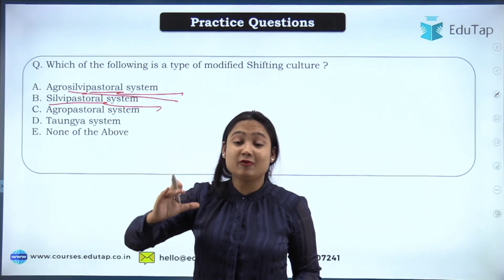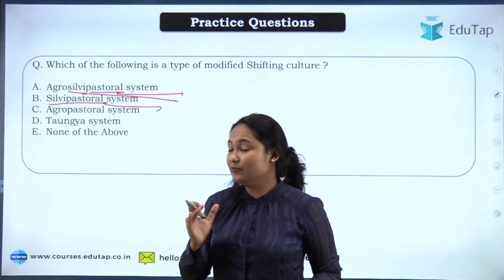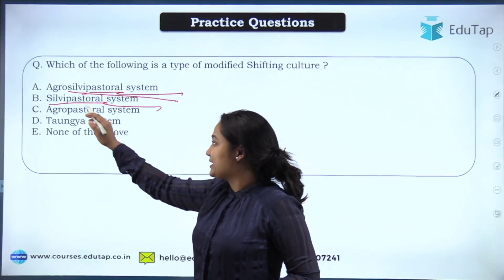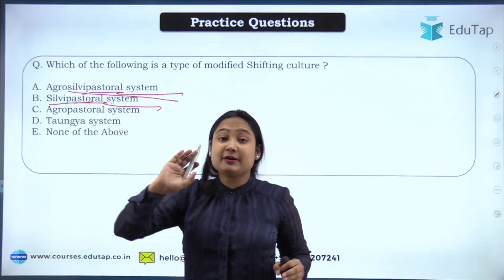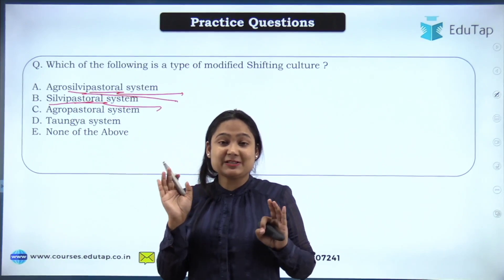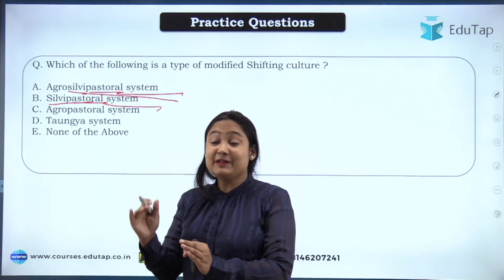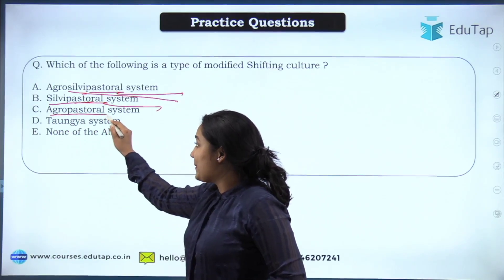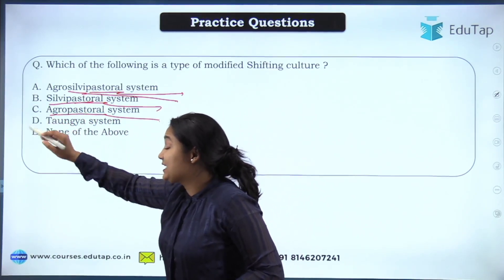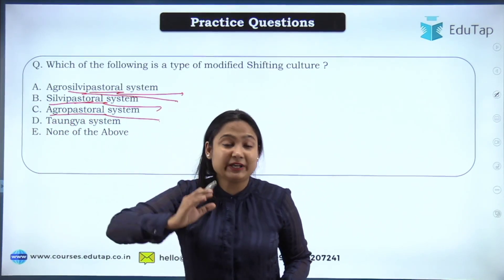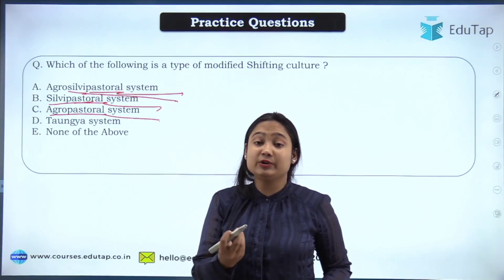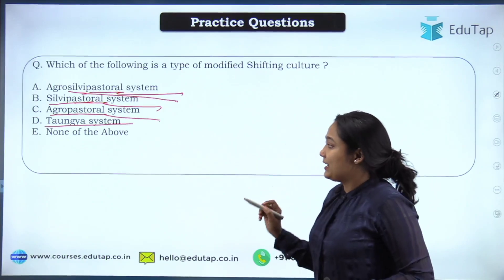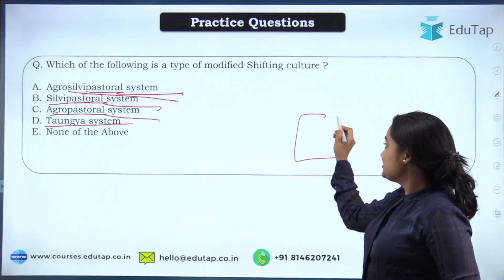So the silvi-pastoral system involves forest trees and grazing for livestock. The agro-pastoral system means doing agriculture with the aim of animal grazing. Now, what is the tungya system?